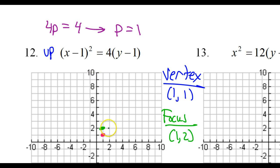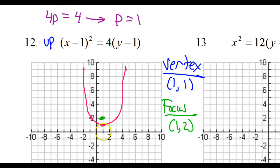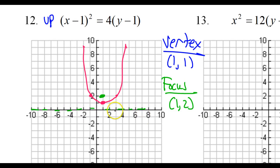Now let's use the focal width, which is 4. That means 2 to the right and 2 to the left. Here's my little parabola. The directrix should be the same p value in the other direction — that's the x-axis, or the line y equals 0. That's it for number 12.